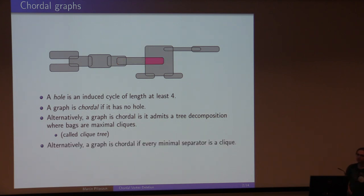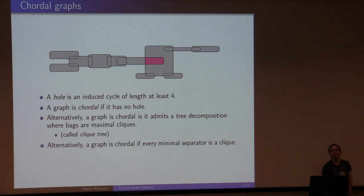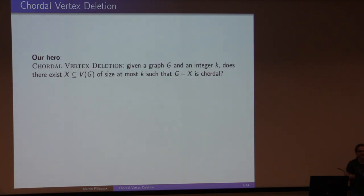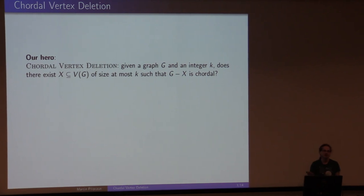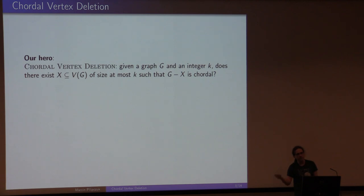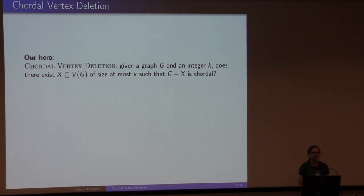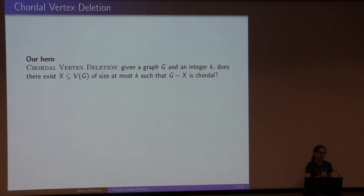There's also another characterization you may find useful: a graph is chordal if and only if every inclusion-wise minimal separator is a clique — there are no non-clique minimal separators. The problem we focus on is deleting the least number of vertices to get a chordal graph. The standard motivation is that data from some experiment should be a chordal graph by some theoretical model, but the data is messy with some errors, so we model it as a chordal graph plus a few extra vertices.